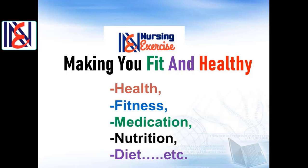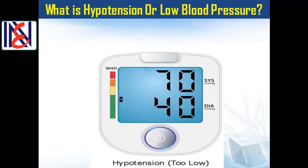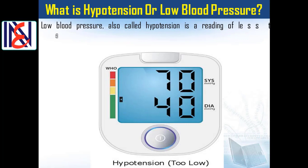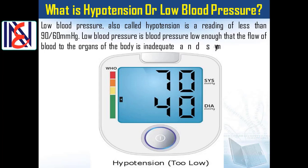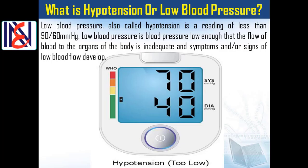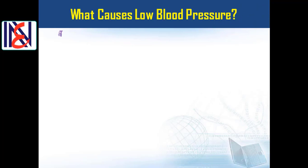Let's start our presentation. What is hypotension or low blood pressure? Low blood pressure, also called hypotension, is a reading of less than 90 over 60 millimeters of mercury. Low blood pressure is blood pressure low enough that the flow of blood to the organs of the body is inadequate, and symptoms or signs of low blood flow develop.